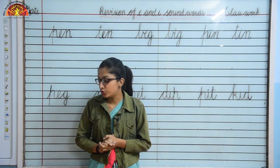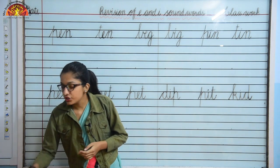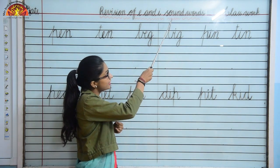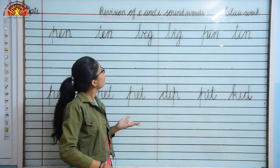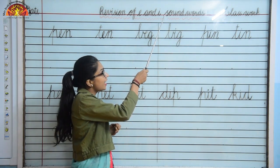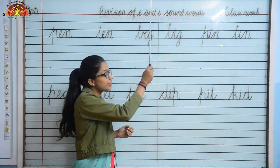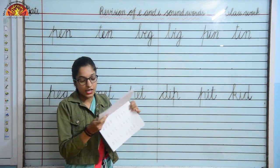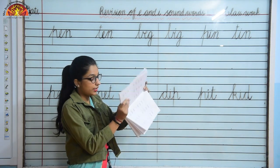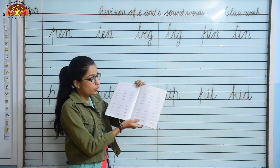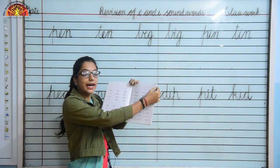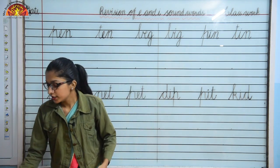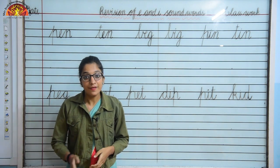So kids, today we are going to do revision of E and I sound words. You have to take out your English practice notebook, open it, mention the date and classwork here. Now everyone take out your pencil.